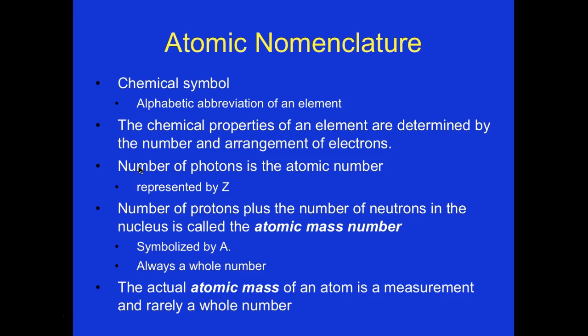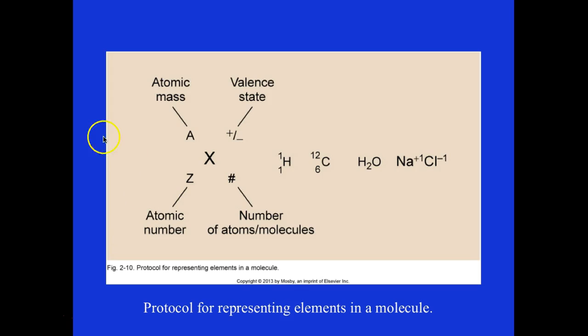Atomic nomenclature: the chemical symbol is an alphabetic abbreviation of an element. The chemical properties of an element are determined by the number and arrangement of electrons. The atomic number Z represents the number of protons. The atomic mass number A is the number of protons plus the number of neutrons in the nucleus — always a whole number. The actual atomic mass of an atom is a measurement and rarely a whole number.